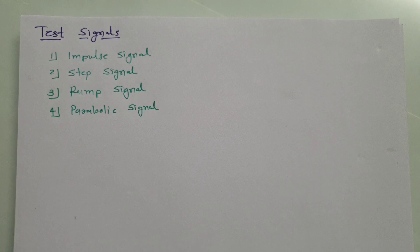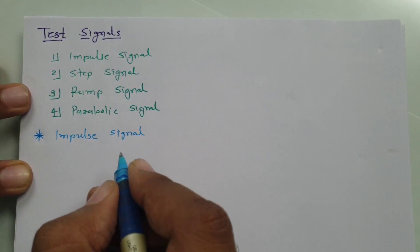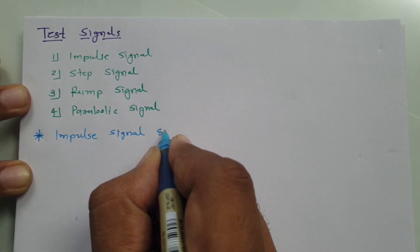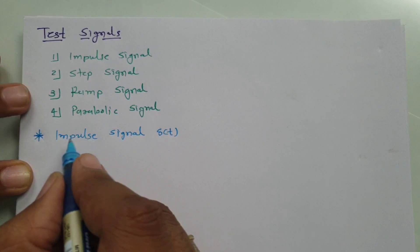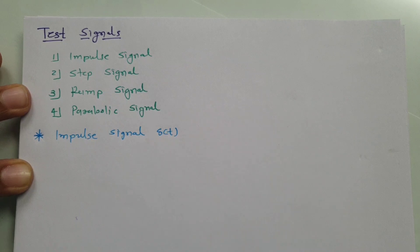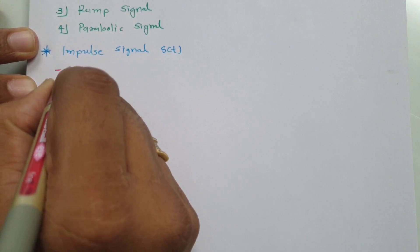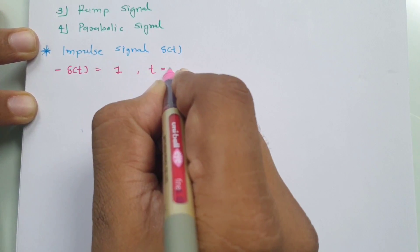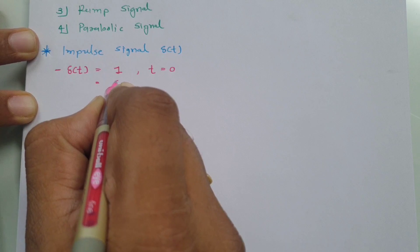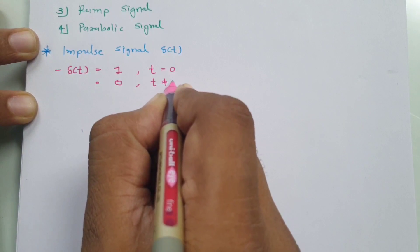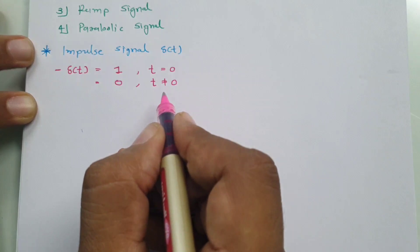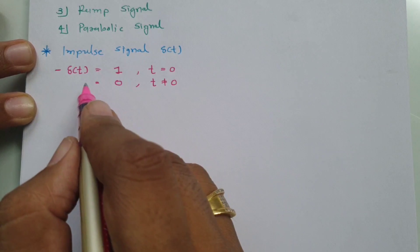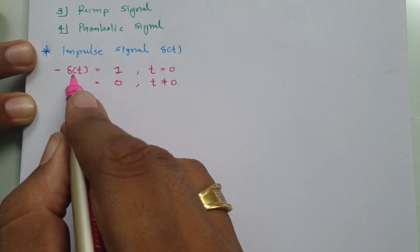Let us understand the impulse signal first. Impulse signal is denoted by δ(t). Its value will be 1 when t equals 0, and its value will be 0 when t is not equal to 0. So at time t equals 0, the impulse value is 1, and when t is not equal to 0, its value will be 0.